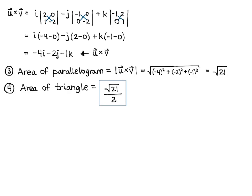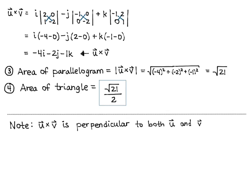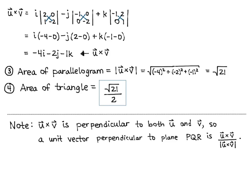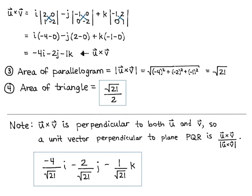The second part asked us to find a unit vector perpendicular to the plane PQR. Note that u cross v is perpendicular to both u and v, so a unit vector perpendicular to the plane PQR is u cross v divided by the magnitude of u cross v. This gives us (-4/√21)i - (2/√21)j - (1/√21)k.